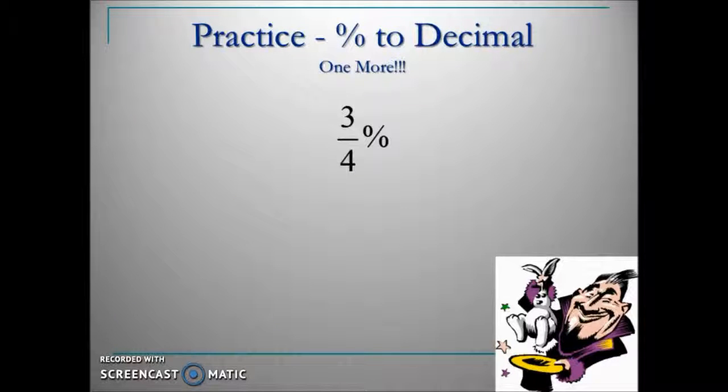Here we have a fraction in a percent. The best suggestion is to replace that fraction to an equivalent decimal. Three fourths. Three divided by four is .75, and now to convert this to a decimal. That was the trick.